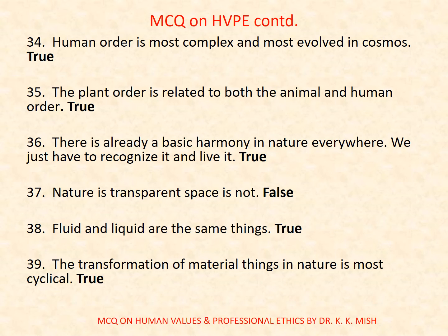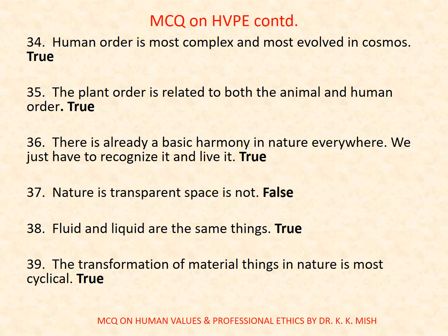Question 34: Imagination includes desire, thought, and expectation — true or false? True. Question 35: Human order is the most complex and most evolved in the cosmos — true or false? True. Question 36: The plant order is related to both the animal and human order — true or false? True. Question 37: There is already a basic harmony in nature everywhere; we just have to recognize it and live it — true or false? True. Question 38: Nature is transparent; space is not — true or false? False. Question 39: Fluid and liquid are the same things — true or false? True. Question 40: The transformation of material things in nature is most likely cyclical — true or false? True.